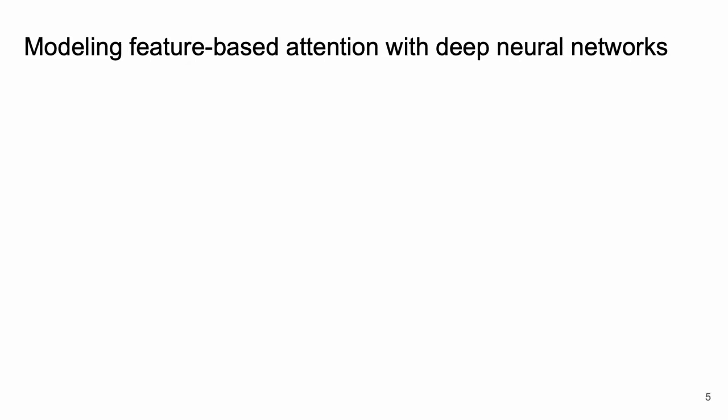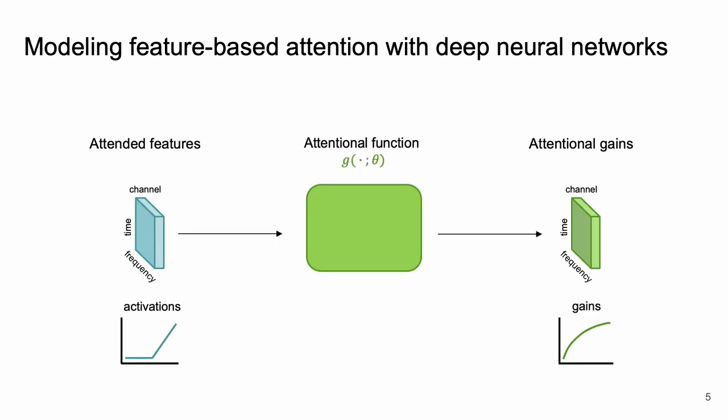To build models of feature-based attention we turn to deep learning. The idea is to learn functions that take in attended features and return corresponding attentional gains such that attended features with high activations give us high gains and unattended features with low activations give us low gains.